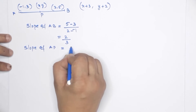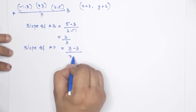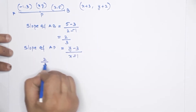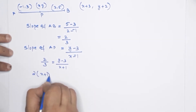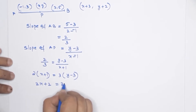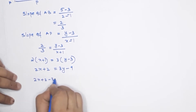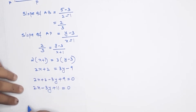Slope of AB: y2 minus y1 by x2 minus x1. That is 2 by 3. Cross multiply: 2 into (x+1) equals 3 into (y minus 3). That is 2x plus 2 equals 3y minus 9. So 2x minus 3y plus 11 equals 0. Now let's look at this equation.